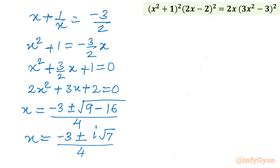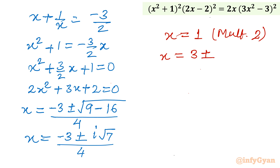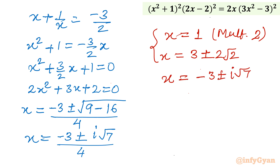All 6 solutions: x = 1 with multiplicity 2, x = 3 ± 2√2 (two real solutions), and x = (-3 ± i√7) / 4 (two complex solutions). Overall, 4 real solutions and 2 complex solutions. I hope this video was meaningful to you. Don't forget to like, share, and subscribe. Bye-bye till next video — good luck and take care of yourself.